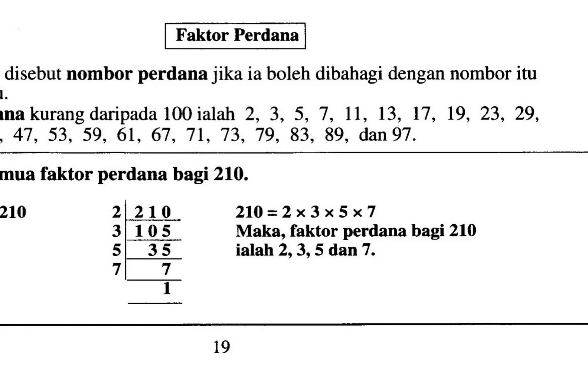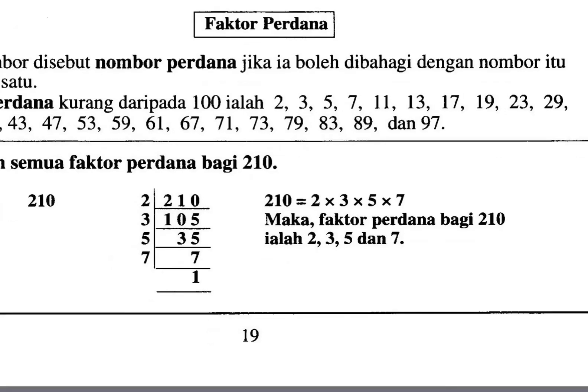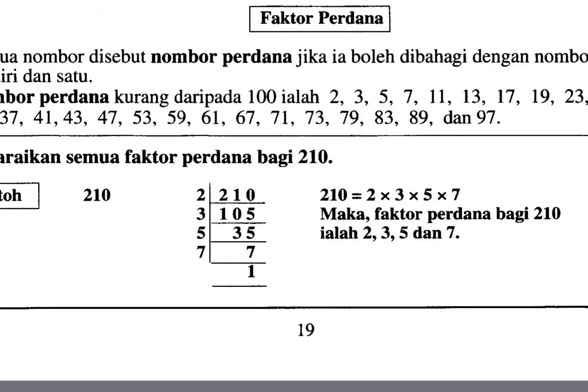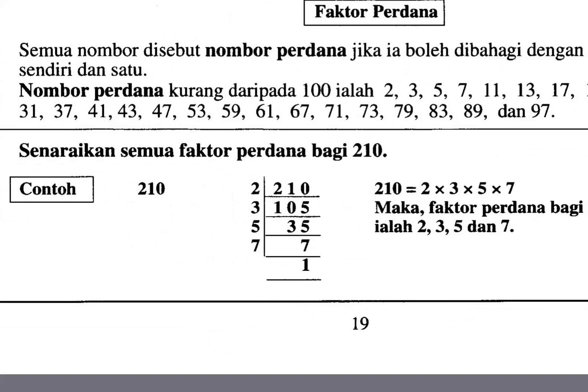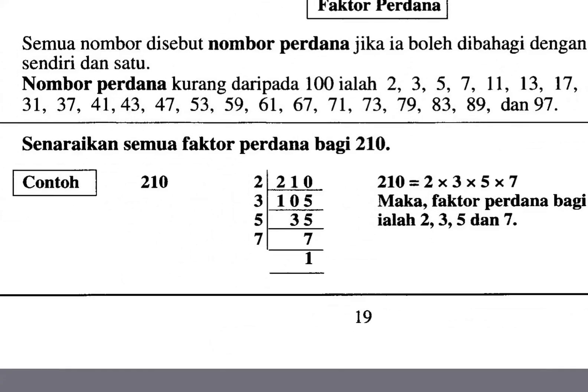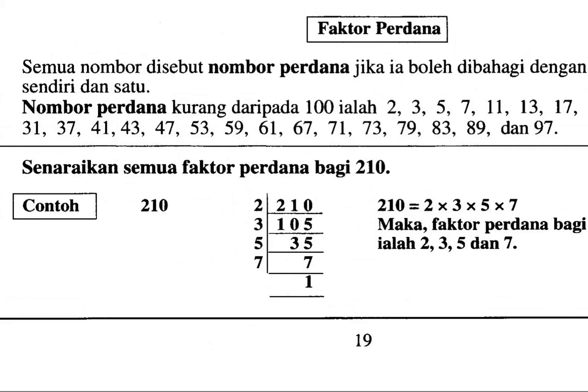29 — tak boleh. 31 — cannot. Boleh tak 31 bahagi dengan any number? Tak boleh. Bahagi 2 tak boleh, bahagi 3 tak boleh, bahagi 4 tak boleh, bahagi 5 tak boleh. Semua tak boleh.